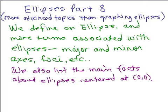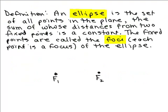We define an ellipse and other terms associated with ellipses such as major and minor axes, foci, et cetera, and then we list the main facts about ellipses centered at the origin (0,0). We've covered the basics of ellipses which would be to know the equation of ellipses in standard form and also how to graph an ellipse.